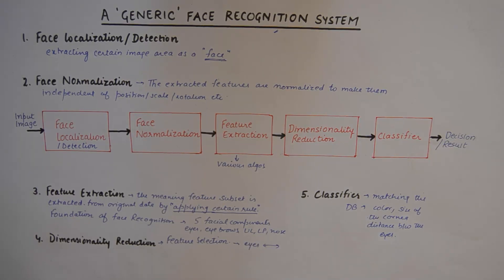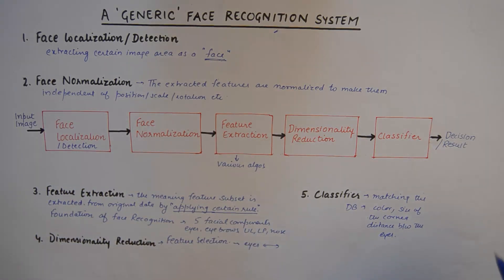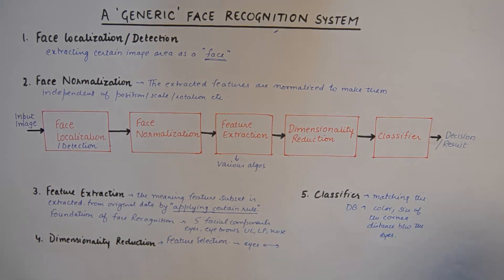A classifier is basically classification — we have a huge database of users with their facial components registered with us. The classifier matches the input image of the face to the ones we have in the database, helping us make a meaningful result or decision. That is how a generic face recognition system works, with its five different blocks.